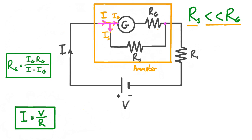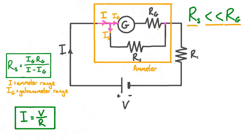In practice, ammeters have a maximum value of I that they can measure, and for this value of I, we expect the needle on the ammeter to be fully deflected. In other words, for our ammeter's maximum rated current I, we want the current in the galvanometer Ig to be the full deflection current of the galvanometer. We can think of I as the maximum current our ammeter can measure — the range of our ammeter — and Ig as the full deflection current of our galvanometer. The equation tells us the shunt resistance needed to measure a current I, given a galvanometer with maximum deflection current Ig and resistance Rg.